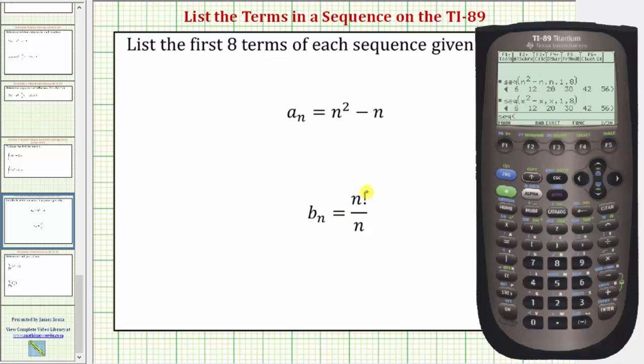And now we'll enter the formula which is n factorial divided by n. Let's go and use n again just for review. So alpha six brings up the n. The factorial is located under the math probability menu. So we'll press second, five for math. Probability is seven, so we'll press seven.